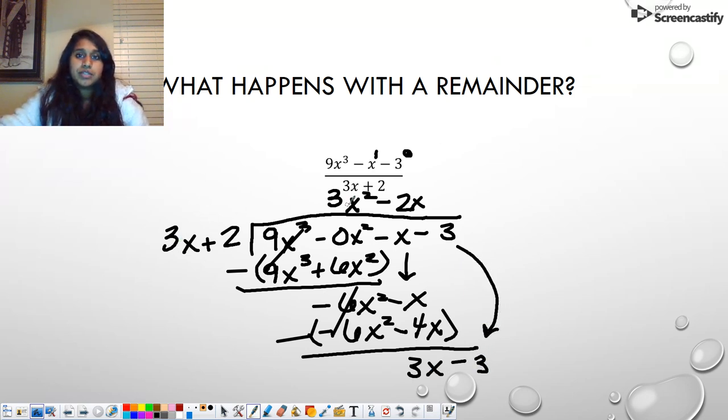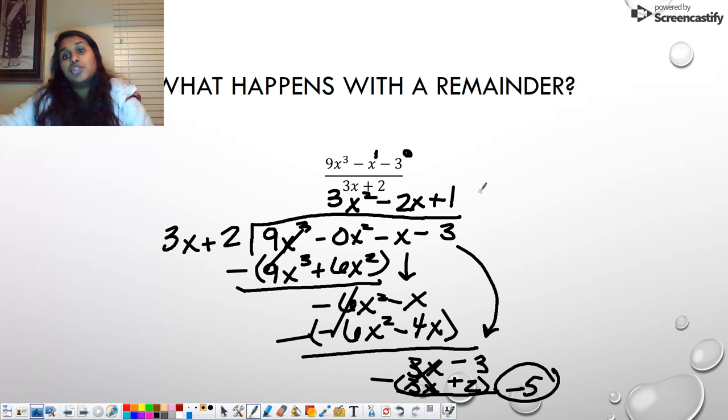Then we do how many times does 3 go into 3x? It goes in one time. That one's pretty easy. So that's 3x. And 1 times 2 is positive 2. But we switch the signs. That's going to cancel out. And guess what? So is this. Negative 3 and negative 2 should give me negative 5. Well, that's not a 0. That tells me I have a remainder. So what am I going to do? I'm simply going to attach my remainder over my divisor.